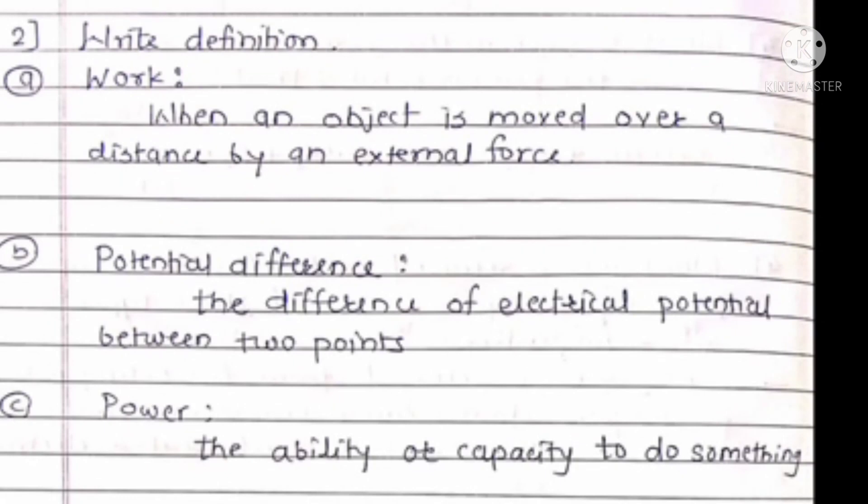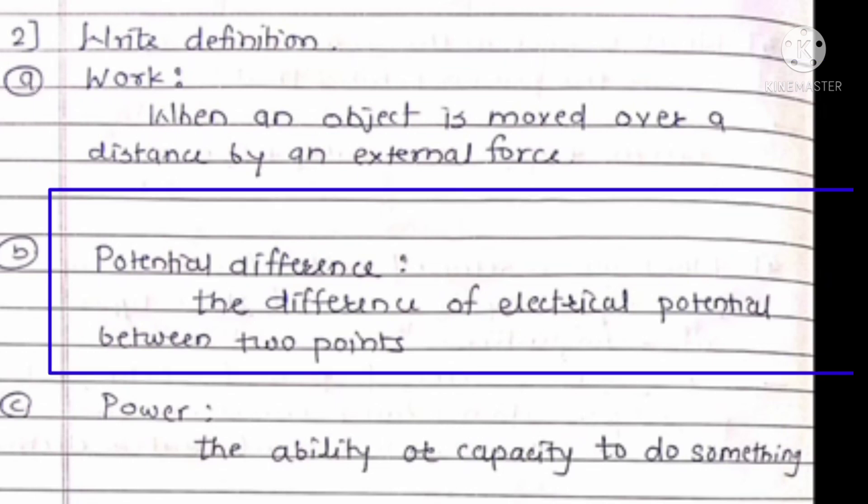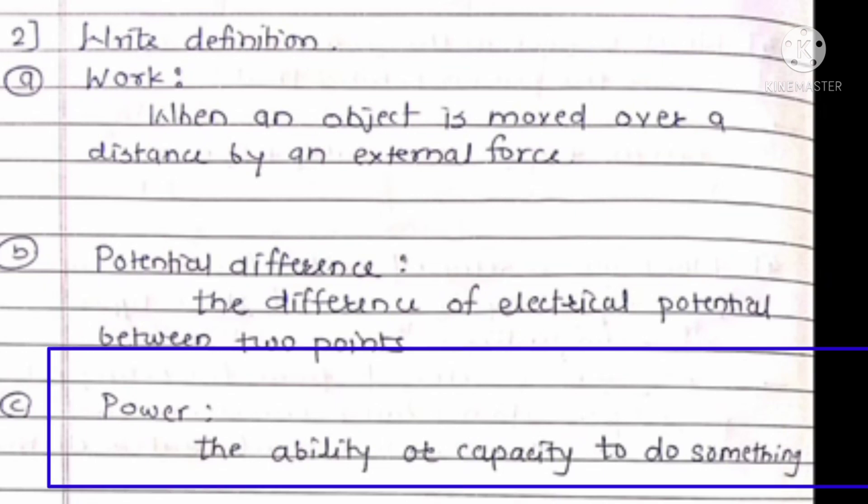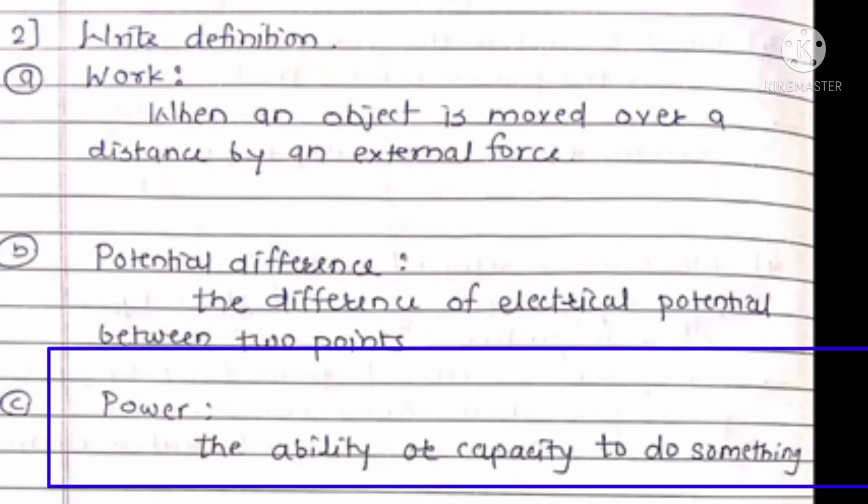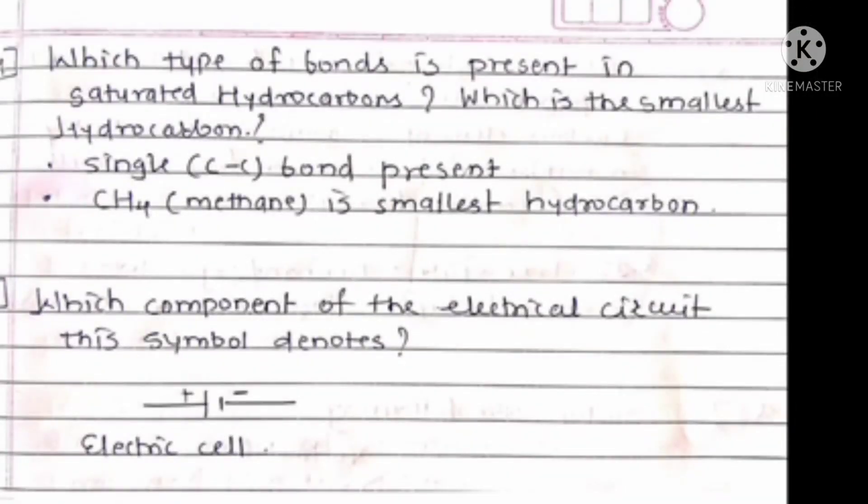Question number second: Write definitions. Work: When an object is moved over a distance by an external force, then it is known as work. Potential difference: The difference of electrical potential between two points, known as potential difference. Power: The ability or capacity to do something, known as power.